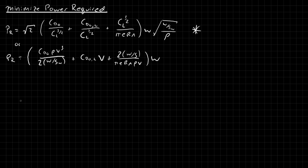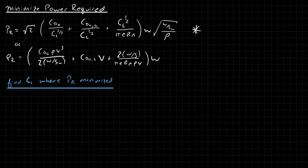We're going to stick with the top form today because it's a little easier to work with. We're going to start off by finding the lift coefficient at which the power required is minimized. So: find CL where power required is minimized. Of course this is a familiar process — we're going to take the derivative of the power required with respect to CL and set it equal to zero.